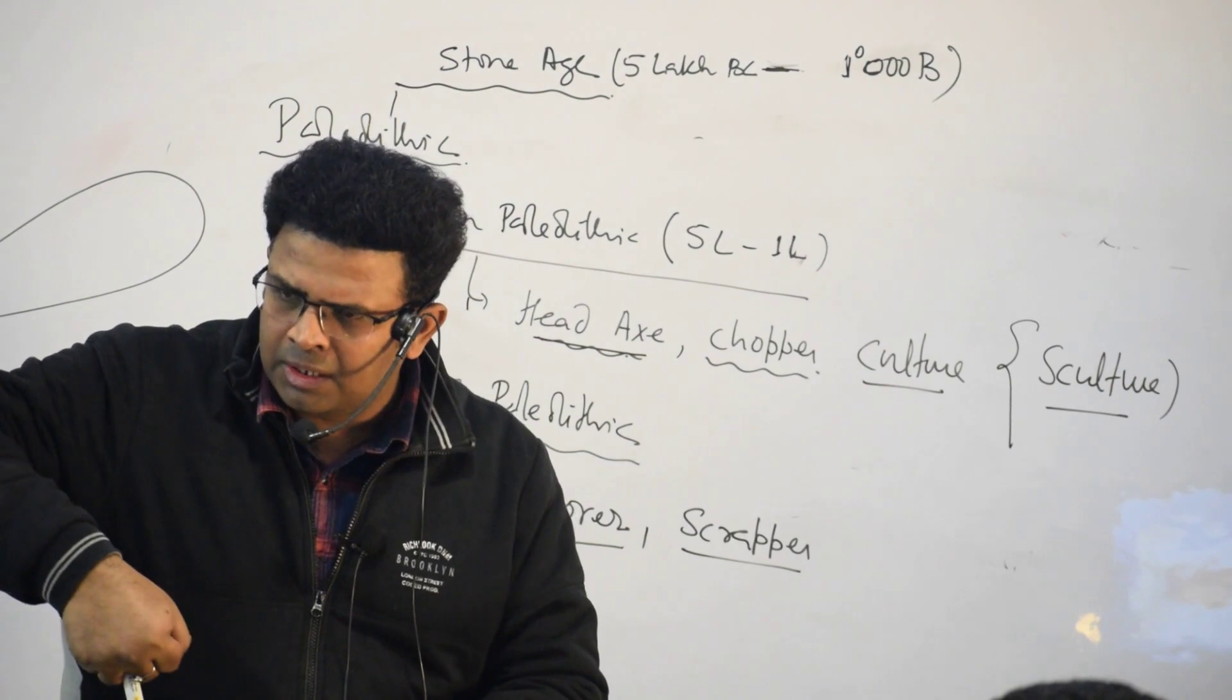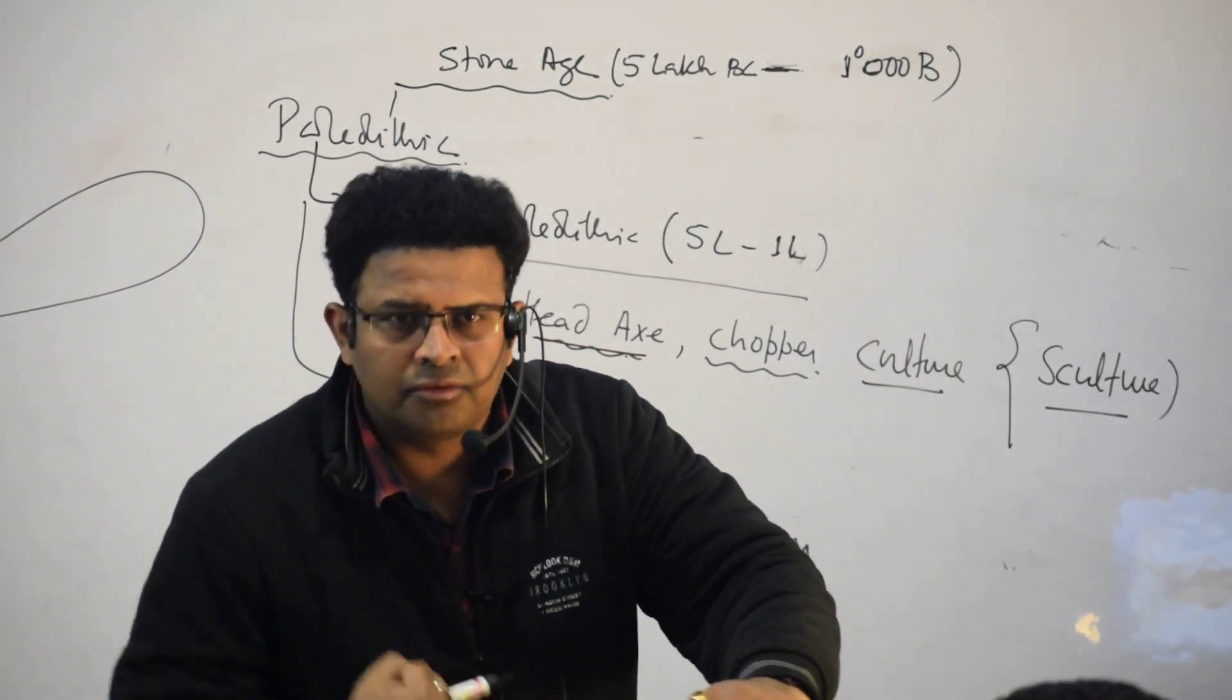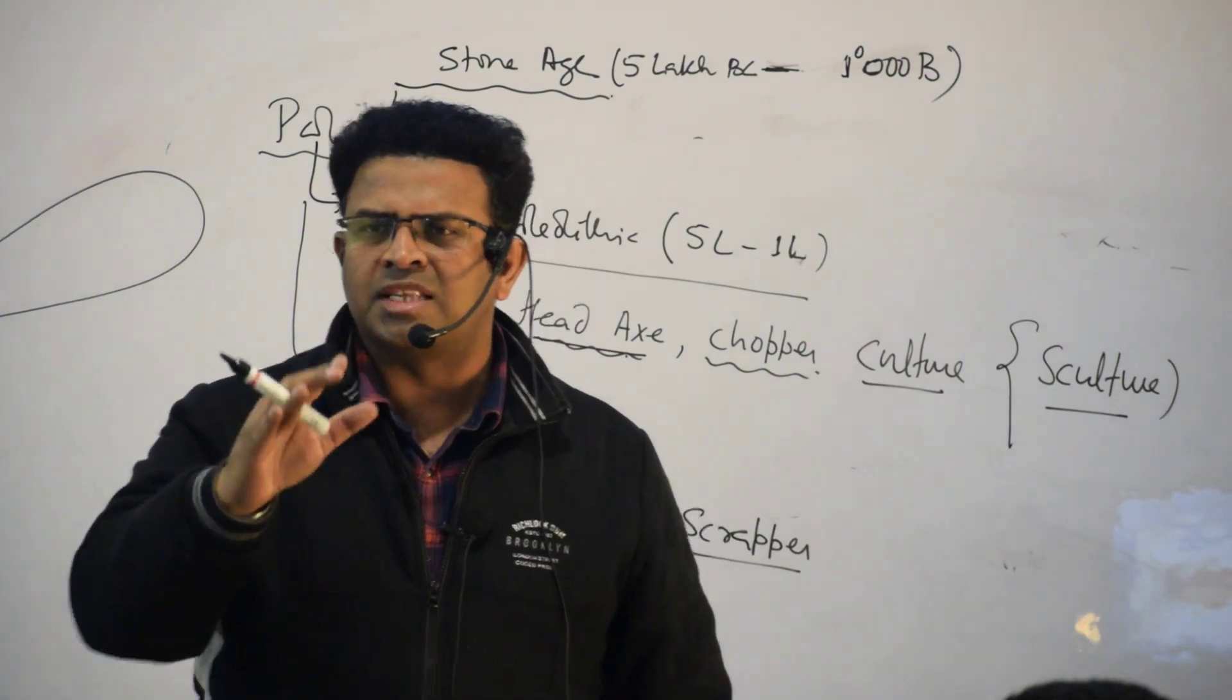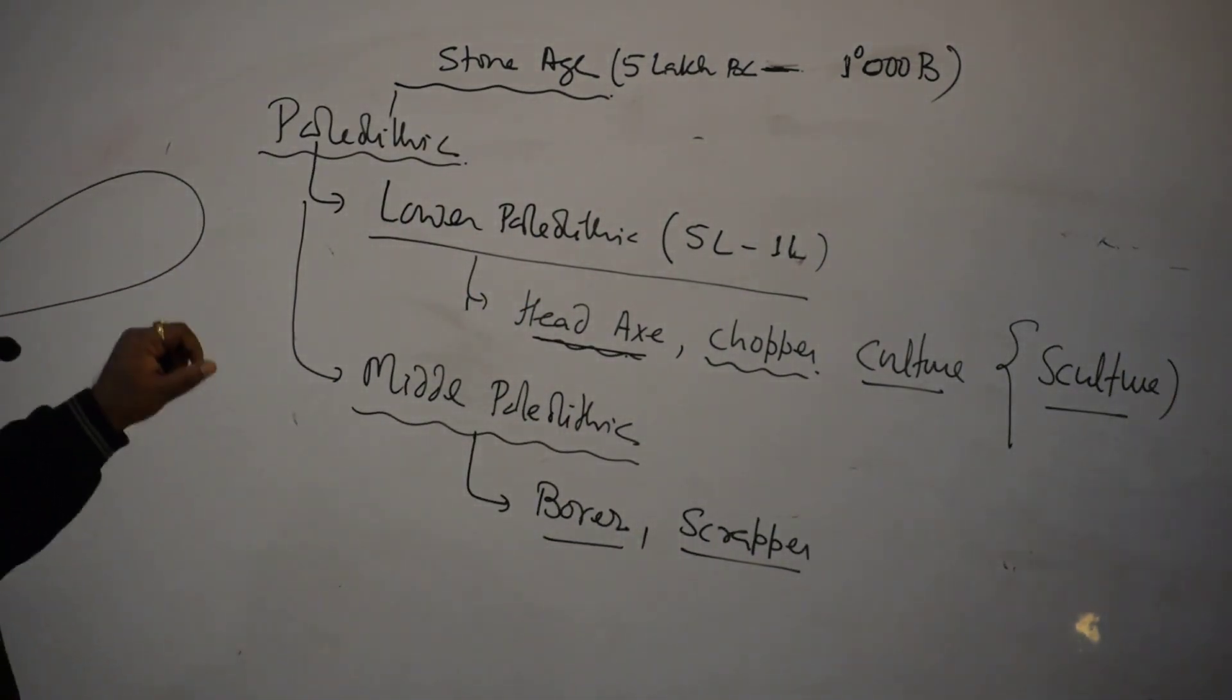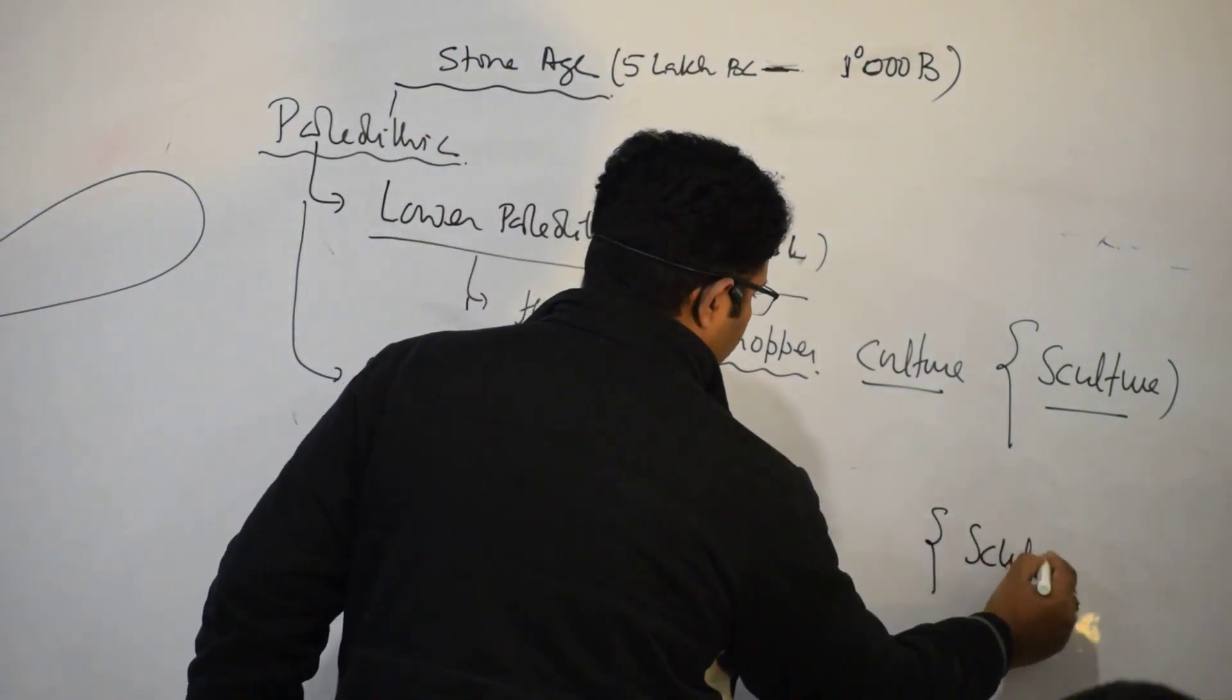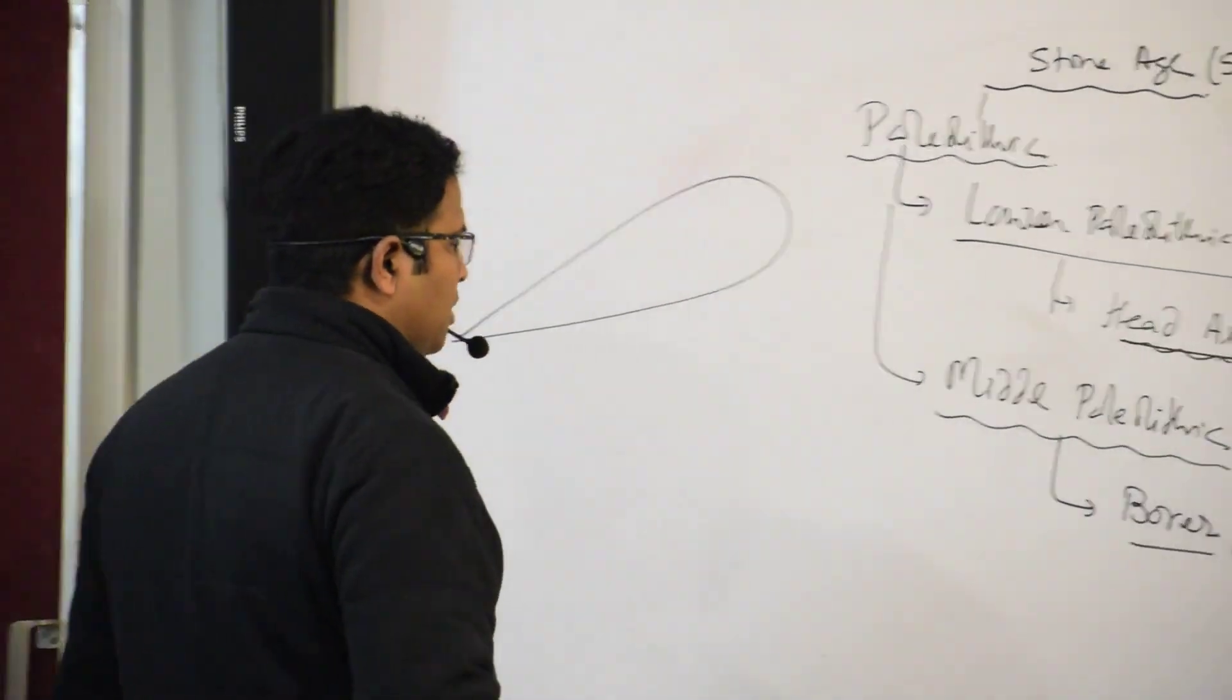The same kind of tools they have developed means they can enter some of the animals they have killed and they can enter this borer into the animal's body to remove the flesh. Yes, and then scrapper to remove and cut the flesh a little bit. So which tools has come? Which is middle age? Borer and scrapper culture, and thereafter coming of which one?